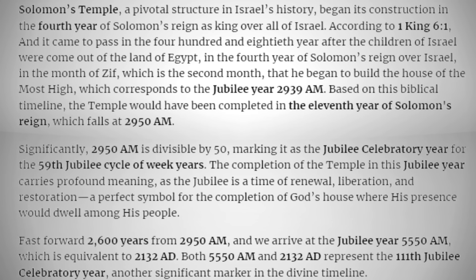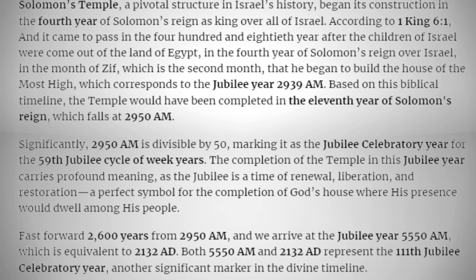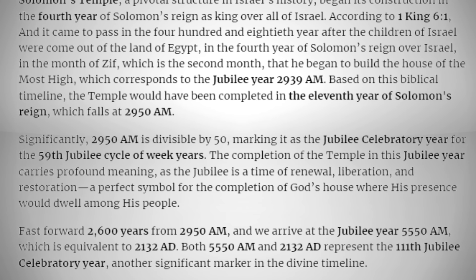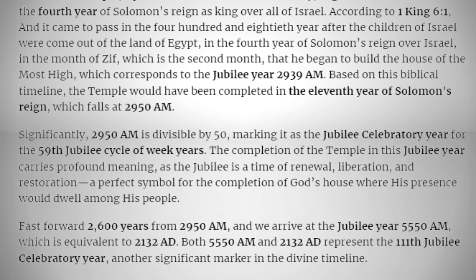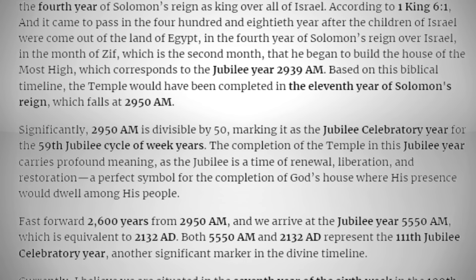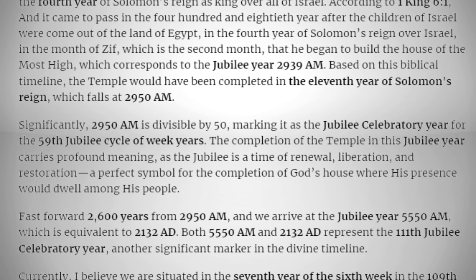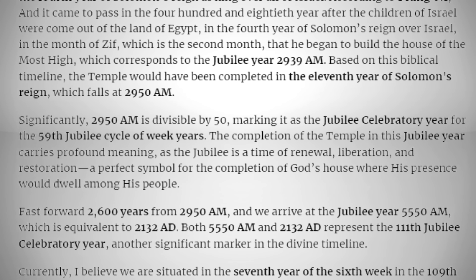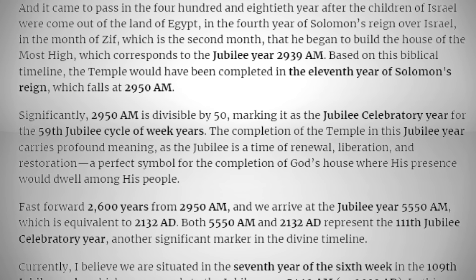The temple's completion falls at 2950 AM. Significantly, 2950 AM is divisible by 50, marking it as the jubilee celebratory year for the 59th jubilee cycle of week years. The completion of the temple in the jubilee year carries profound meaning, as the jubilee is a time of renewal, re-liberation, and restoration — a perfect symbol for the completion of God's house where his presence would dwell among his people.